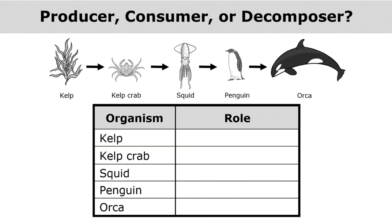We use tables to organize information, and we can use a table to organize the information that we get from a food chain or a food web. In this table, we'll record whether each organism is a producer, a consumer, or a decomposer.